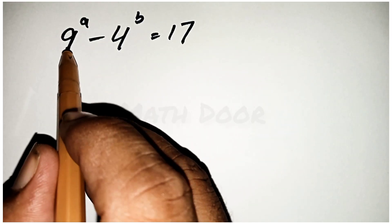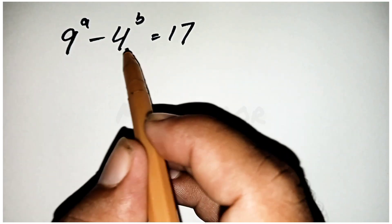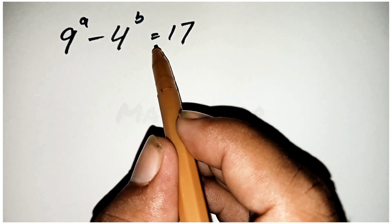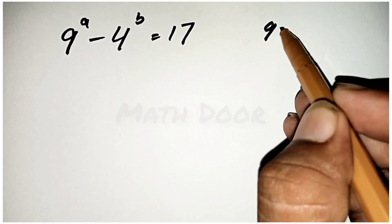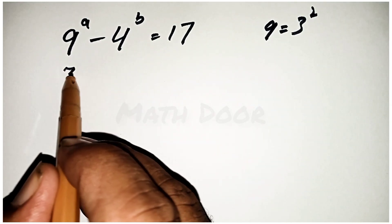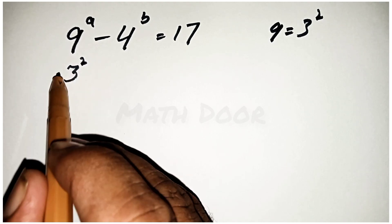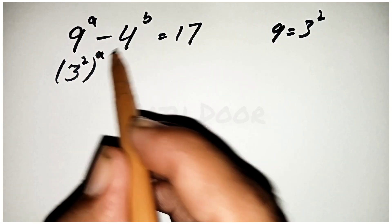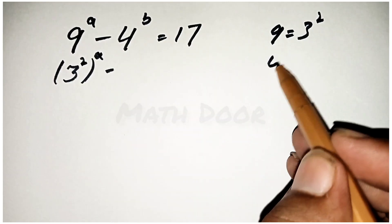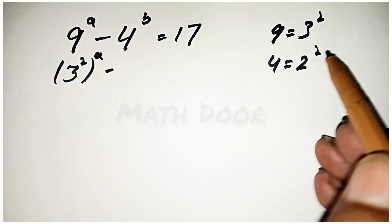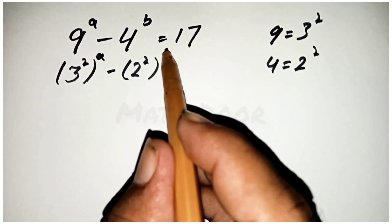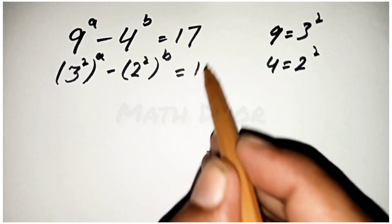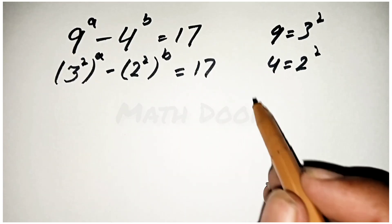Hello math lovers, today our topic is 9 power a minus 4 power b is equal to 17. 9 is equal to 3 power 2, so we write 3 power 2 brackets power a, minus 4 is equal to 2 power 2, so we write 2 power 2 brackets b, is equal to 17.